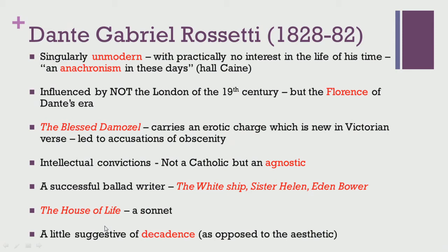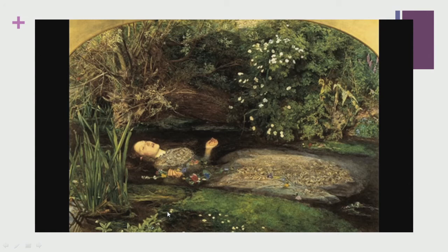He also wrote a sonnet titled The House of Life. His general poetic and artistic tendency was more towards decadence than towards the aesthetic. One of his famous artworks is titled Ophelia, and most Pre-Raphaelite painters produced art of a similar kind, considered quite significant in determining the transition from the Victorian period towards a modernist period.